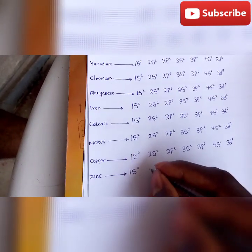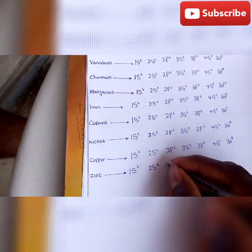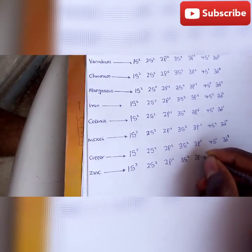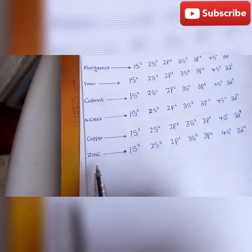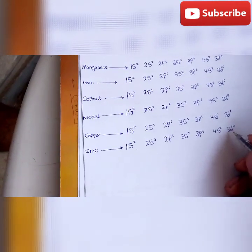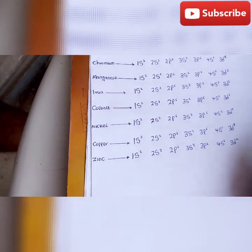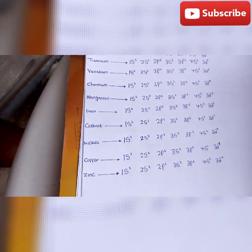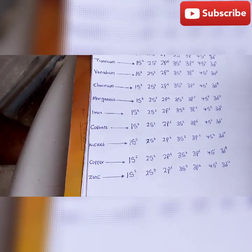Zinc: 1s² 2s² 2p⁶ 3s² 3p⁶ 4s² 3d¹⁰. Zinc is not considered a transition element because its d-block is filled up. Thank you guys, we are done with the electronic configuration of the first 30 elements. We'll be expecting you guys to subscribe to our channel and be expecting more from us. Don't forget to subscribe, click the subscribe button. Thank you guys.